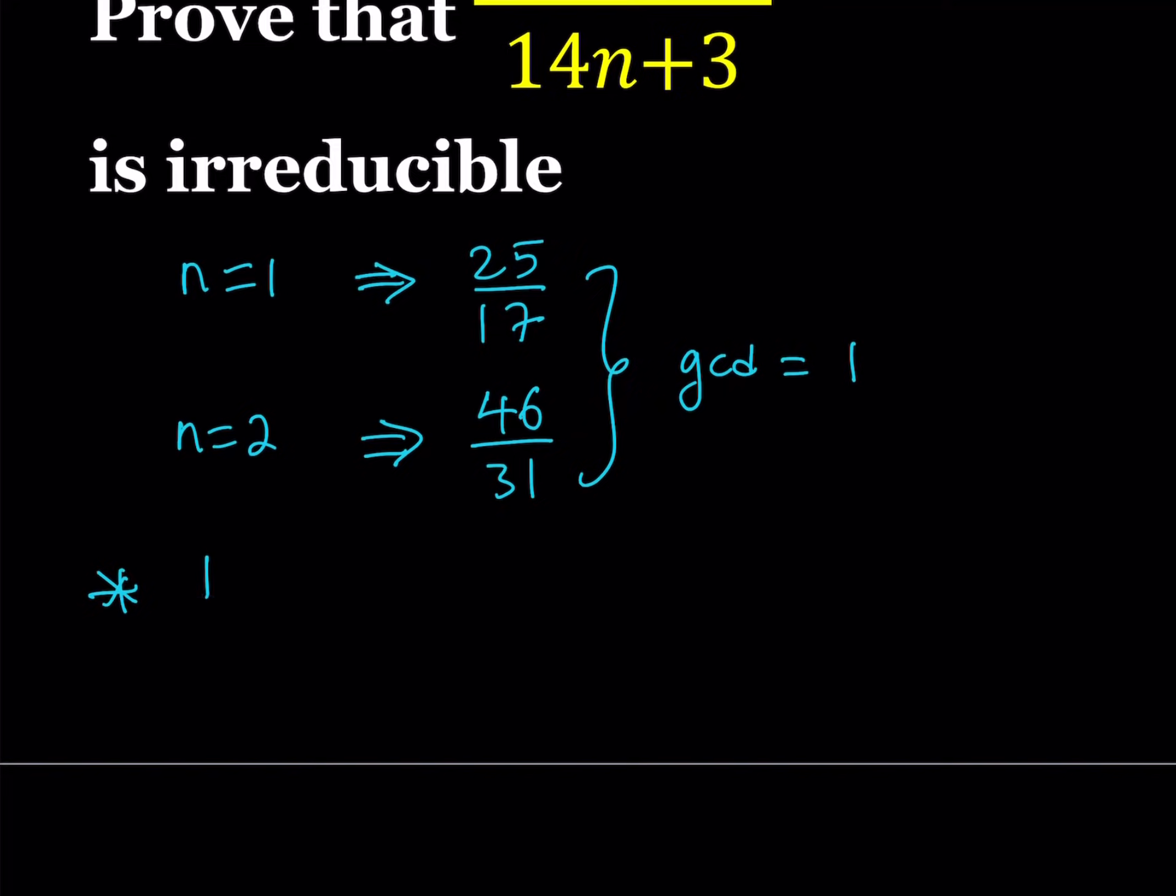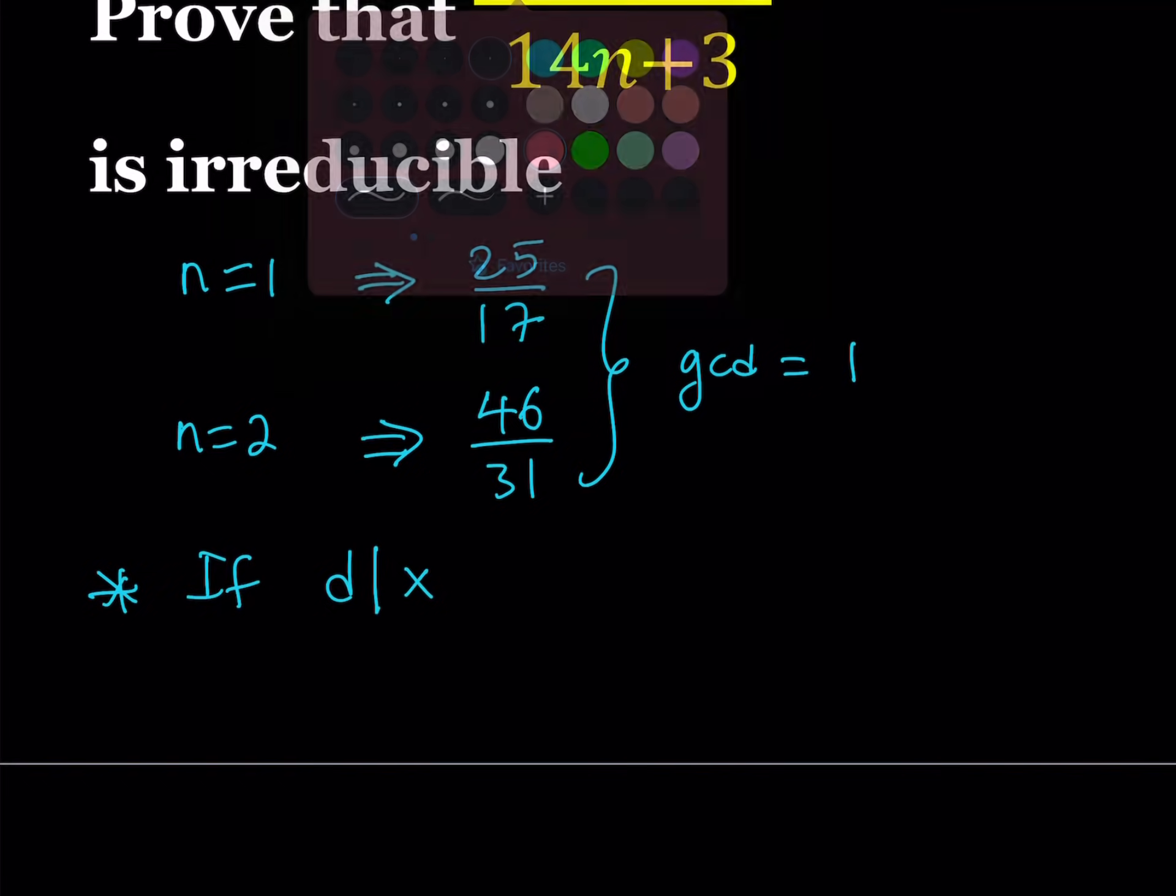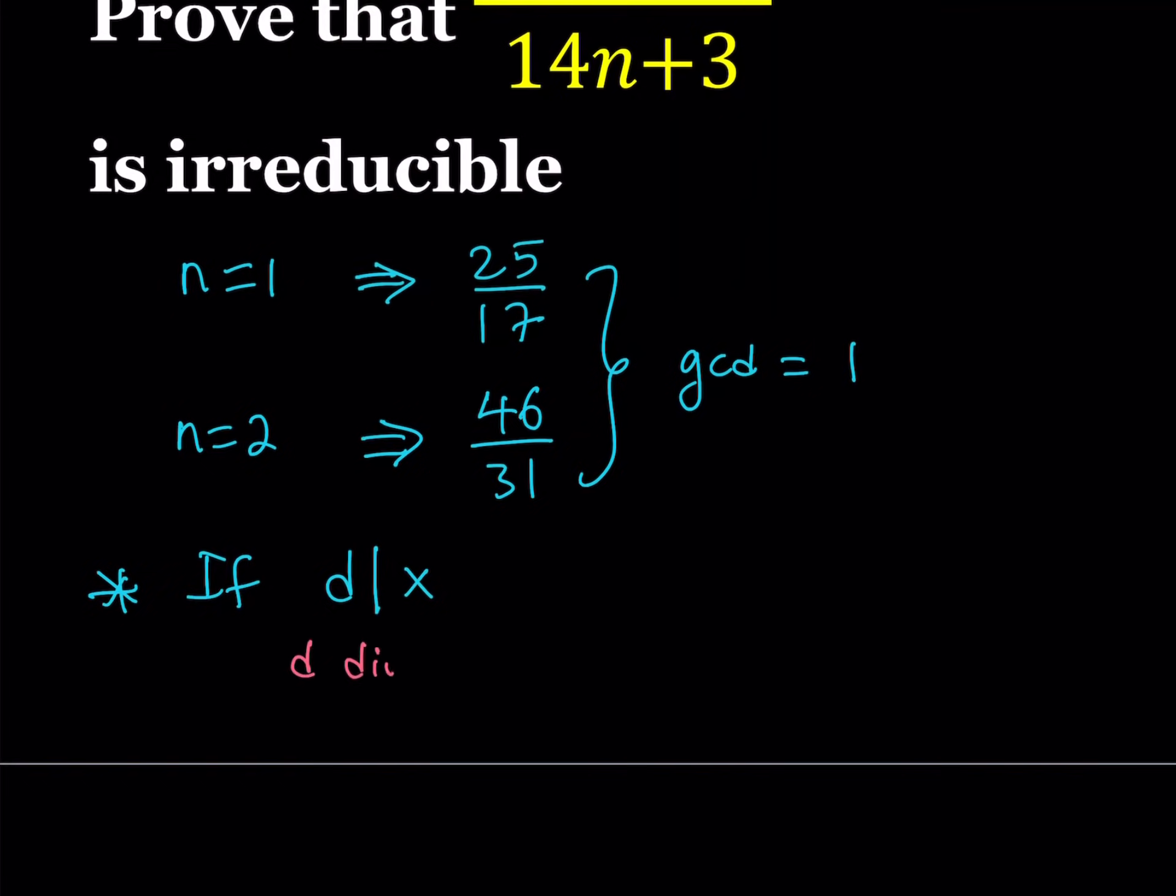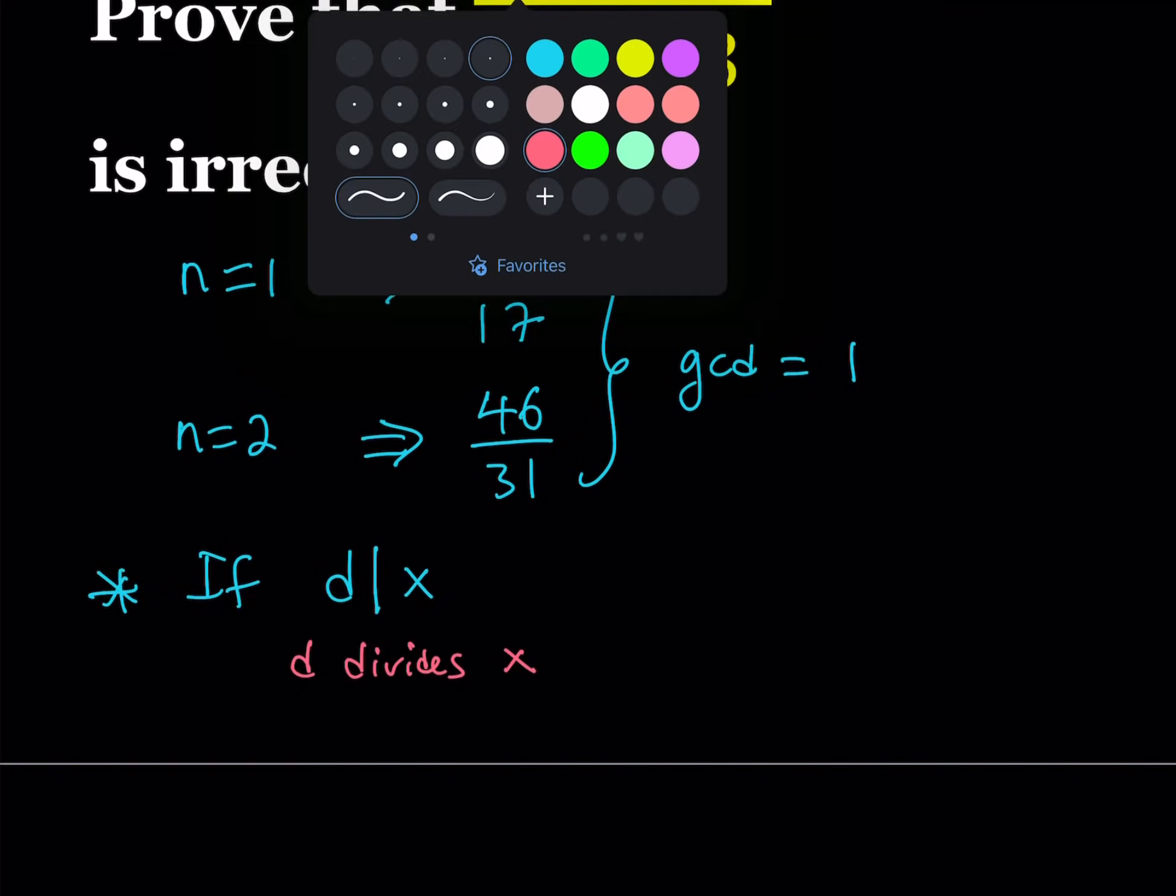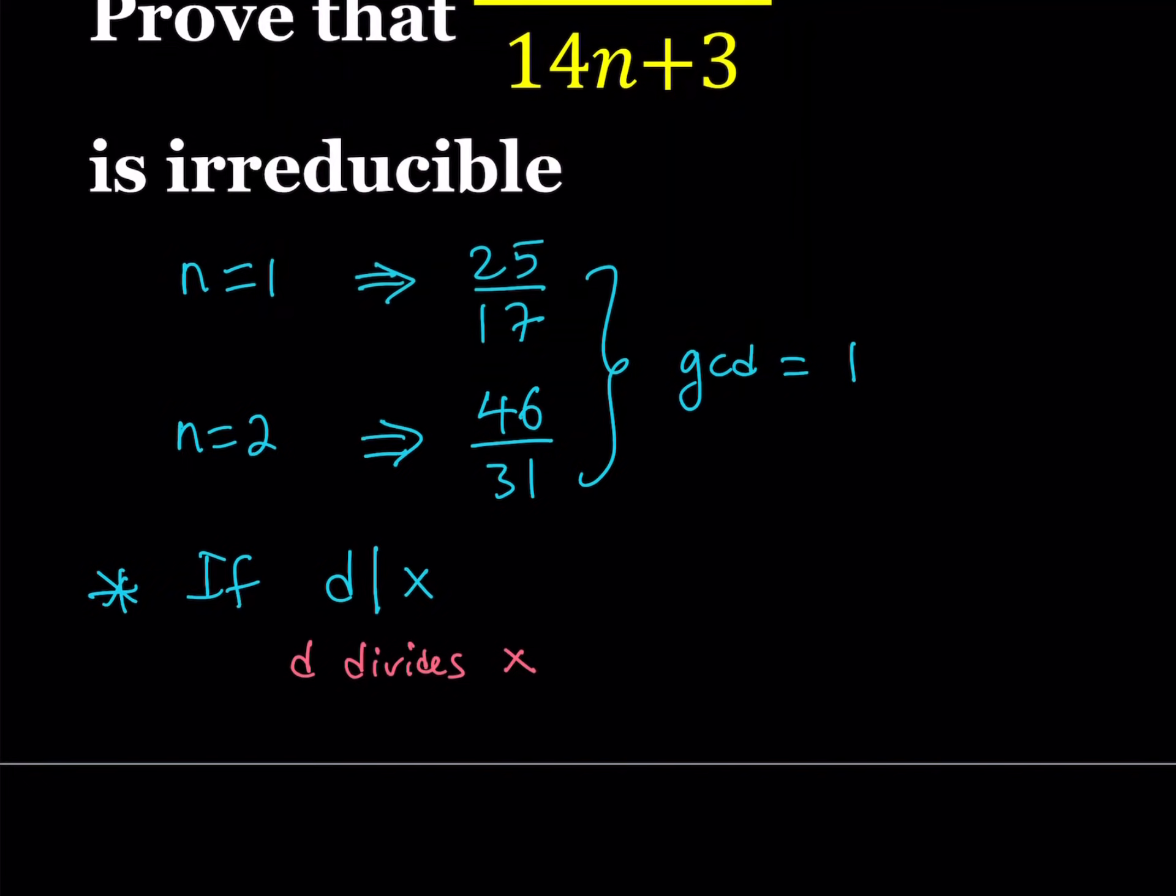When I write something like if d divides x, that vertical line basically means that d divides x. This means d divides x. Obviously, there's a couple ways to say this. You can also say that x is a multiple of d, or you can also say x is divisible by d, which means it leaves no remainder.